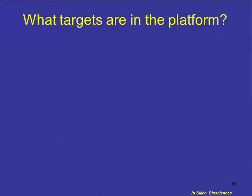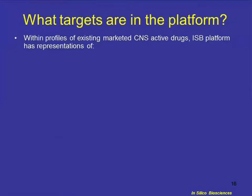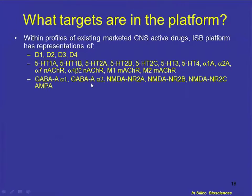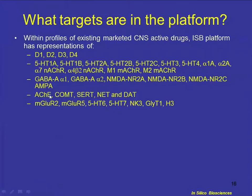In terms of targets currently in the platform: we have dopamine D1 through D4, serotonin 1A through 5-HT4, noradrenergic receptors, glutamatergic receptors, different subtypes of the GABA-A subunits and different subtypes of the NMDA subunits — NR2A, NR2B, and NR2C — with appropriate locations. We also have AMPA receptors, enzymes like acetylcholinesterase, transporters, and a number of more recent targets tested in clinical trials such as encenicline, NGFR5, serotonin 6 and 7, and HTR1 for instance.